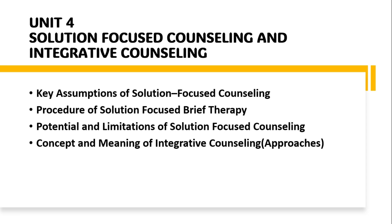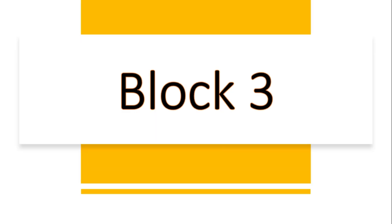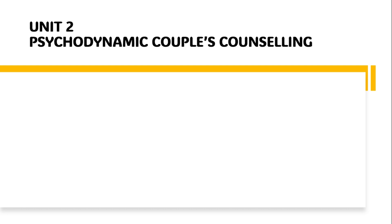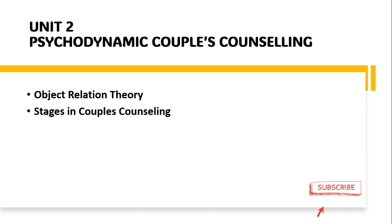You can skip Unit 2. From Block 3, Unit 1: Client-Centered Counseling and Fully Functioning Person. From Unit 2: Object Relation Theory and Stages in Couple Counseling.